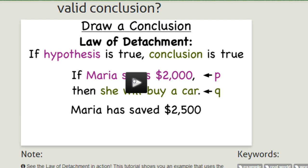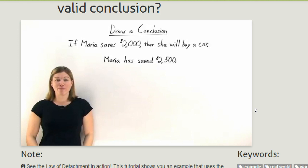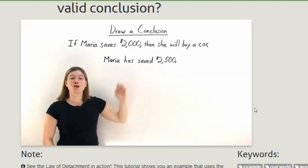Now one of those is really easy to work with, the other one is a little bit harder to understand but I do want to show you guys. Drawing a conclusion from the following statements: If Maria saves $2,000 then she will buy a car. And Maria has saved $2,500. So from these two statements we're given, we want to draw a logical conclusion.